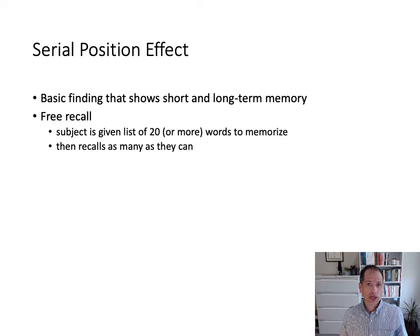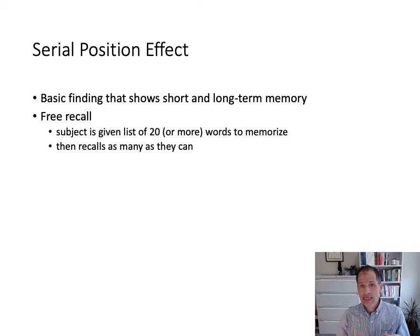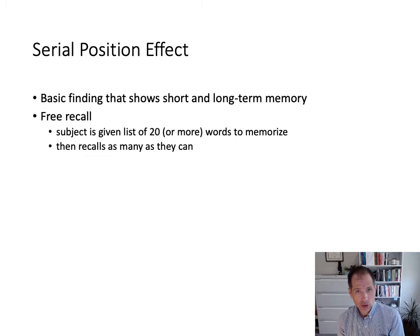The serial position effect is a fairly well-known and easy-to-reproduce finding. The basic idea is you're asked to learn a list of 20 or more words — a list that exceeds your capability to rehearse — and then you're asked to recall that list. The common finding is that people are better at remembering the words at the beginning and at the end of the list, and not so much in the middle.